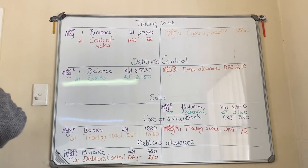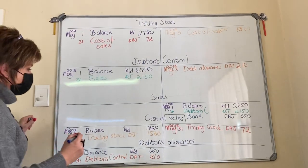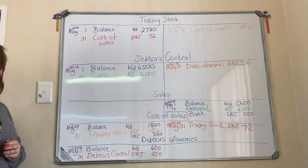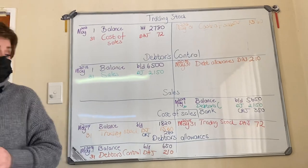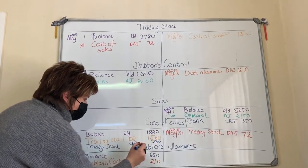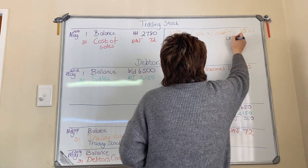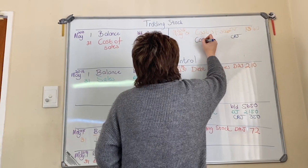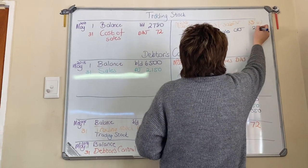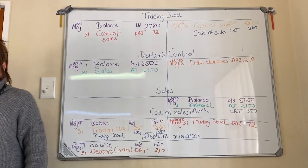I don't have a contra account because they didn't ask us today for that account. Next: cost of sales. Cost of sales is an expense — expenses are debits — so I'm going to debit cost of sales 280, out of my cash receipts journal, May the 31st. Cost of sales tells me my stock has left, so my contra account is trading stock. I've got to go to trading stock to indicate that it has decreased. Any questions? Take them one by one, reason it out.